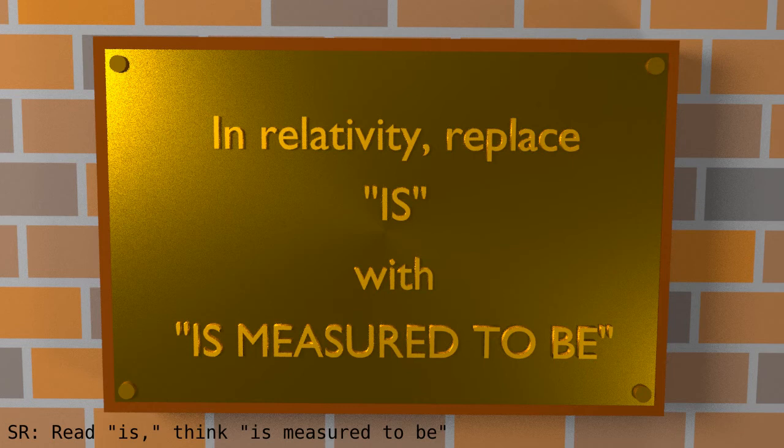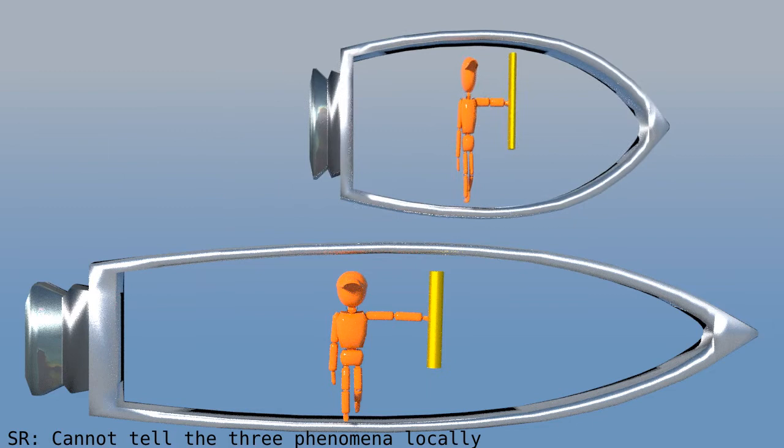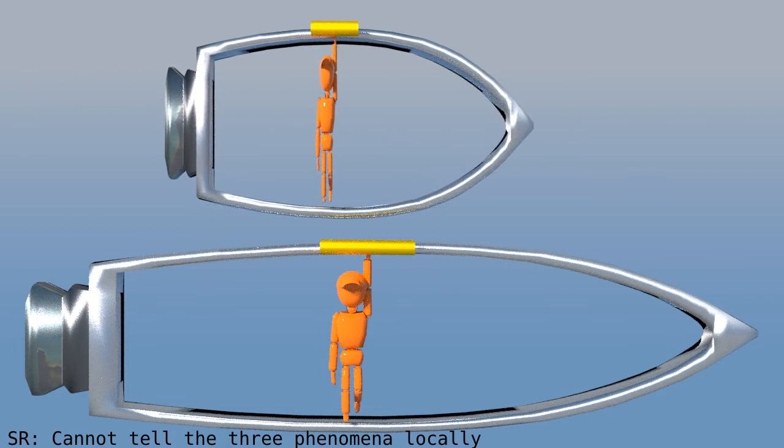We'll see a similar language confusion in quantum mechanics. Let's also point out that a person on the moving spaceship will not notice their length contraction. She and the sticks and the objects to be measured all contract together, so there is no way to notice.